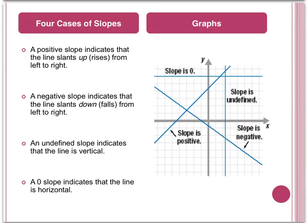There are four different cases of slopes. The first case is a positive slope, and this indicates that the line slants up from left to right. On the graph, the red line indicates a positive slope. If we were to look at an example and solve for the slope, we would find something equaling a positive number, such as m equals 3.